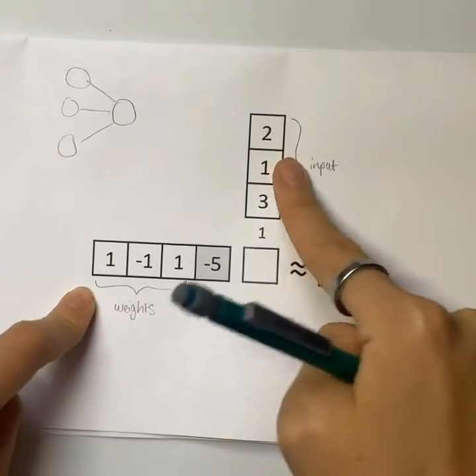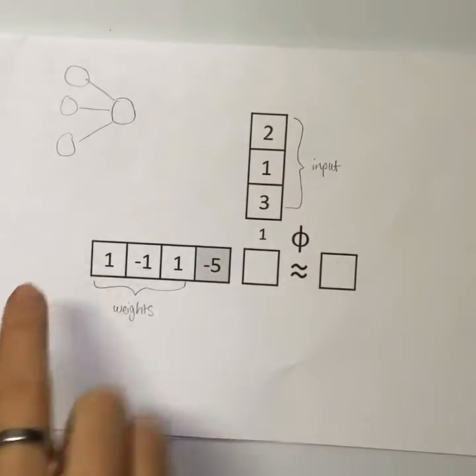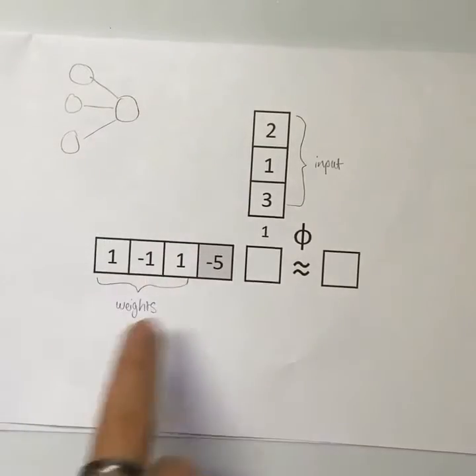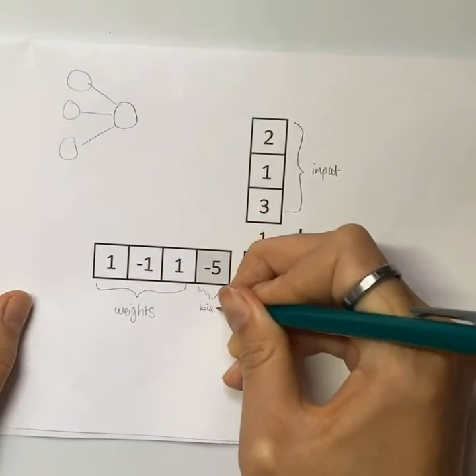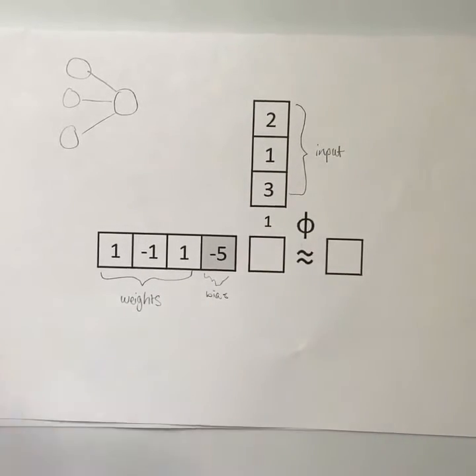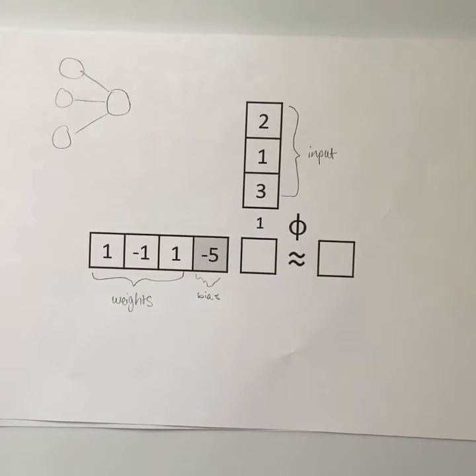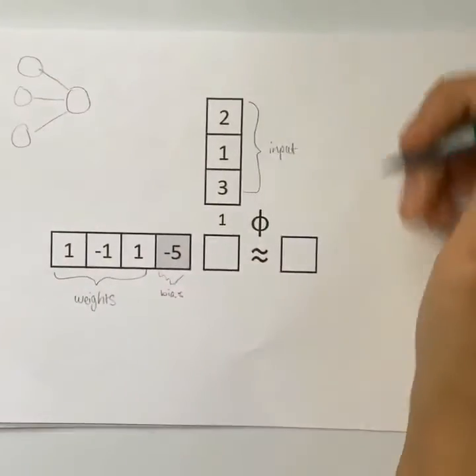The input is multiplied by the weight and then summed to get some final value that then is corrected by a value called a bias. This bias is then added to the summation of the weighted inputs to get the final node value.